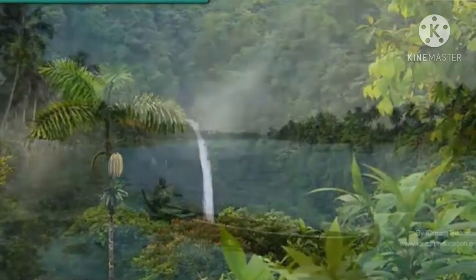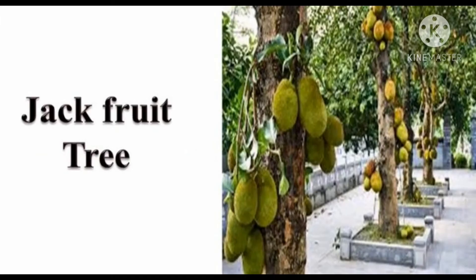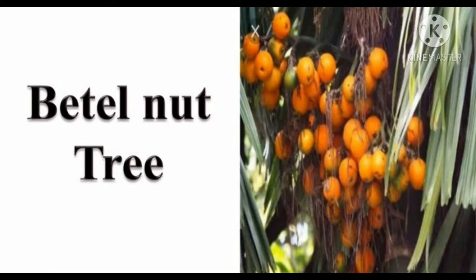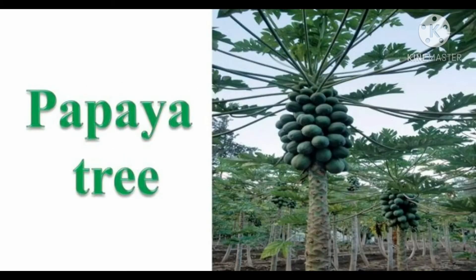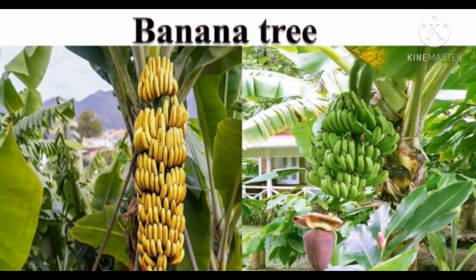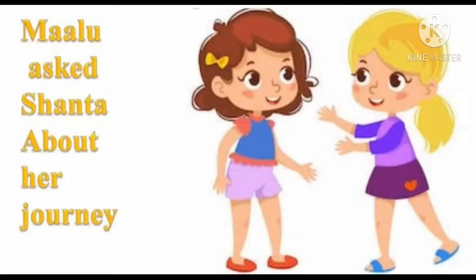It has greenery all around. See here — coconut tree, jackfruit tree, betel nut tree, papaya tree, and banana tree. There are so many fruit trees in Kerala.